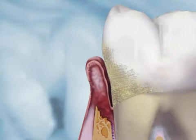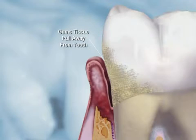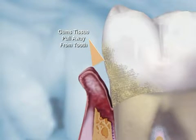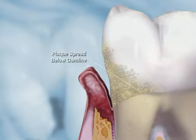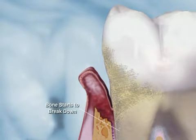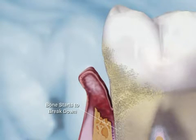Soft tissue, or gum tissue, pulls away from the tooth, forming a pocket which is infected with bacteria. Plaque and calculus spread and grow below the gum line, breaking down the bone and connective tissue.